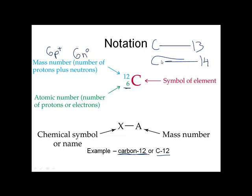The only difference is that carbon-13 has 6 protons and 7 neutrons, and carbon-14 has 6 protons and 8 neutrons. These are the isotopes of carbon: carbon-12, carbon-13, and carbon-14.